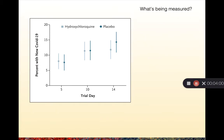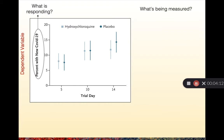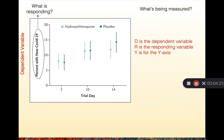Now I want to dig into the idea of what is being manipulated and what is responding. When we talk about a responding variable, in science we call this a dependent variable. A helpful acronym for remembering what a dependent variable is: DRY — where D is the dependent variable, R is the responding variable, and Y is for the y-axis. So the dependent variable that is responding is always going to be located on the y-axis.